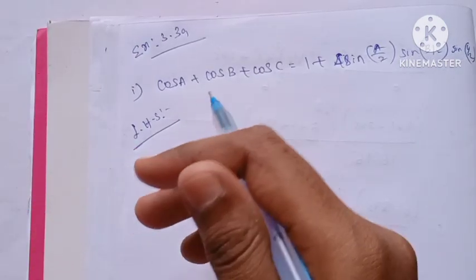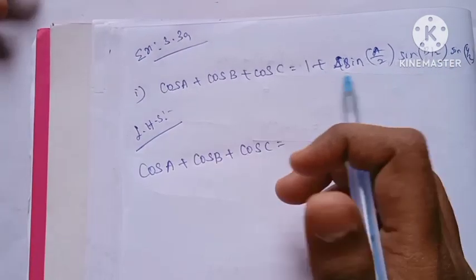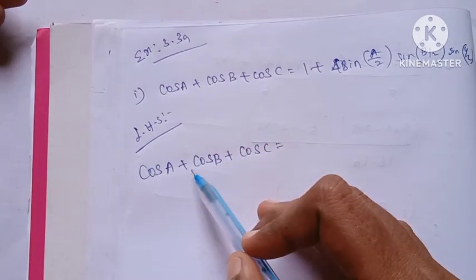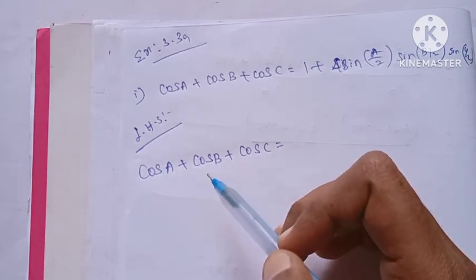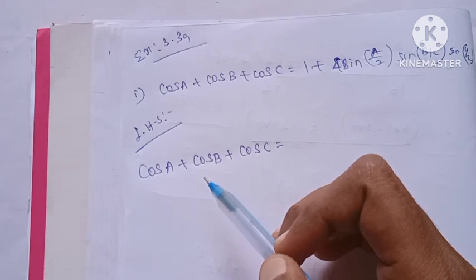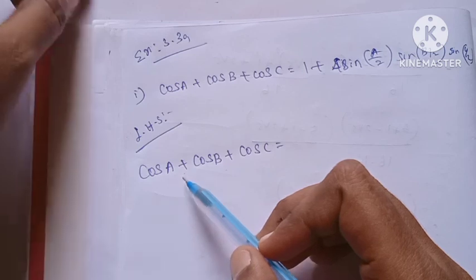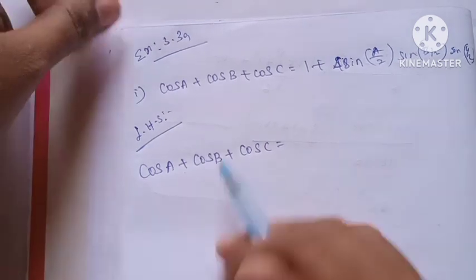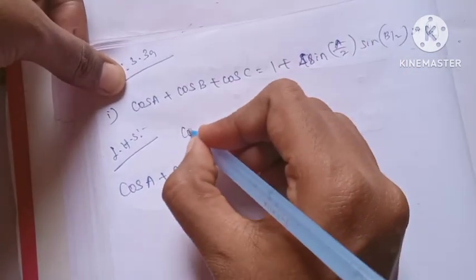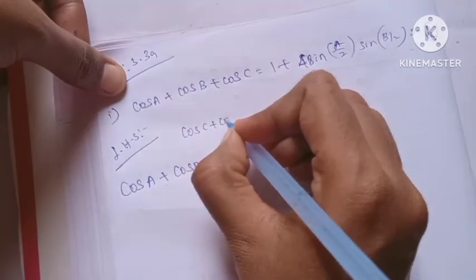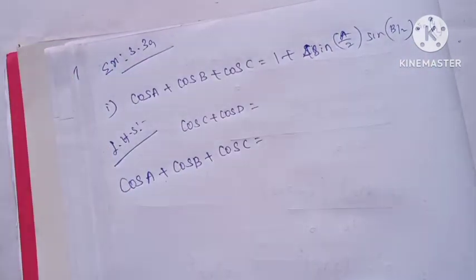Now we will apply the formula. The formula is already given in the book — we use the sum-to-product formula for cos A plus cos B.